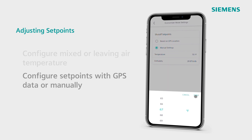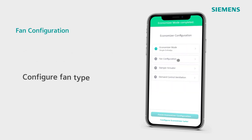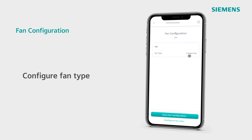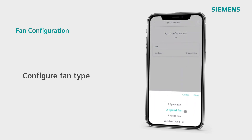Now we can move on to fan configuration. Select your fan type, choosing from single speed, two speed, three speed, or variable speed fan, which will use as many as seven different speeds.